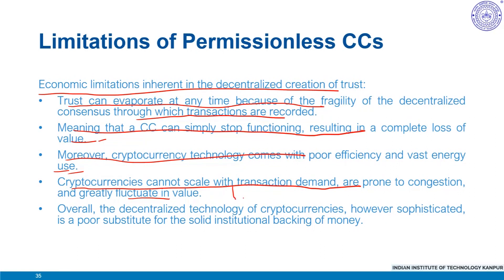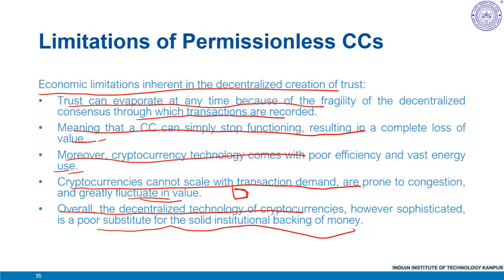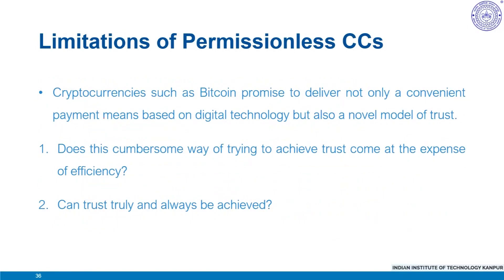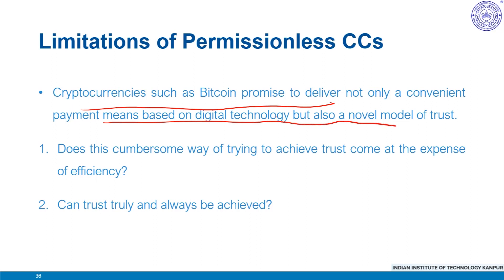As transaction volume increases, the system is designed such that with more traffic, blocks may get saturated and extra transactions may have to wait — this delay may lead to fluctuations in the value of the cryptocurrency. Overall, this decentralized technology, however sophisticated, appears to be a poor substitute for the solid institutional backing of fiat currency. Cryptocurrencies such as Bitcoin promise a convenient payment system and a novel mode of trust, yet delivering on this promise hinges on critical assumptions: whether honest miners control the vast majority of computing power, that users verify the history of all transactions, and that the supply of currency is predetermined by a protocol.